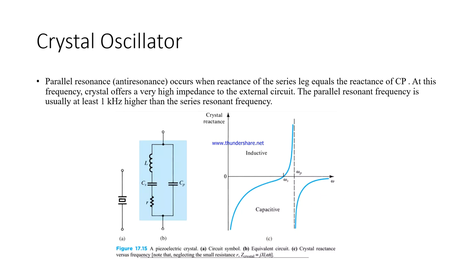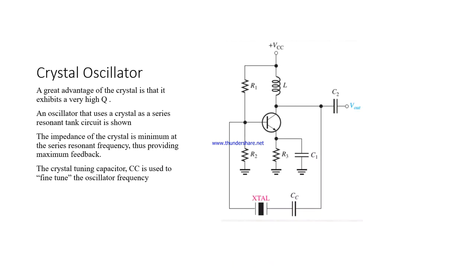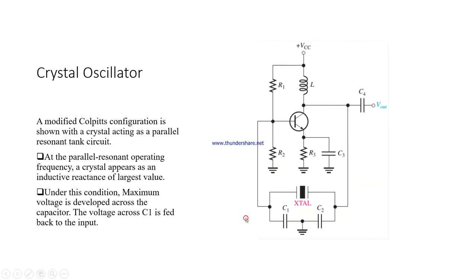The piezoelectric crystal circuit diagram with its equivalent model is shown, along with a reactance versus frequency graph. Capacitive loading occurs first, followed by inductive loading, which gives a certain frequency. Crystal oscillators have the great advantage of exhibiting a very high quality factor. An oscillator that uses a crystal as a series resonant tank circuit is shown — a configuration with a crystal tank circuit used to generate signals.